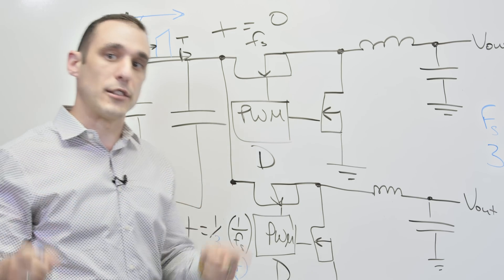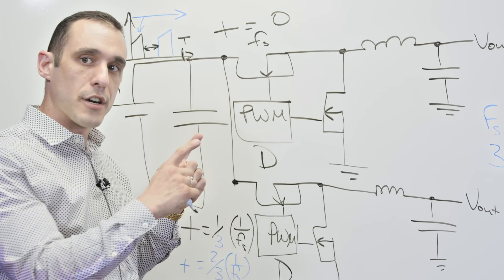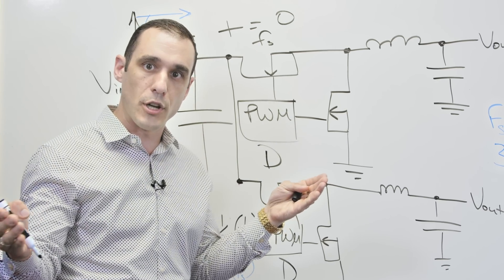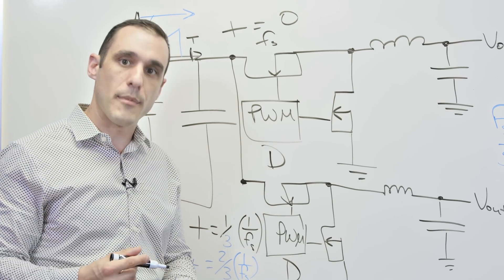So in short, if you need to get to a lower ripple value at a higher current and you want to spread out that thermal load, multi-phase buck regulator might be one of your solutions. How are these switching elements arranged around a controller? Are they integrated or are they placed as discrete components?